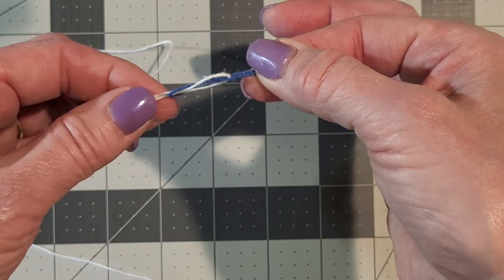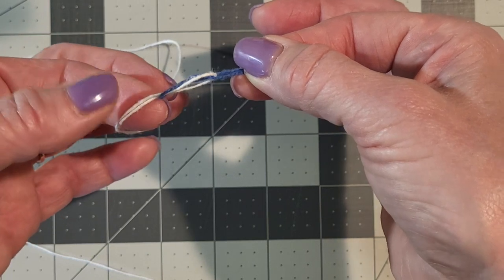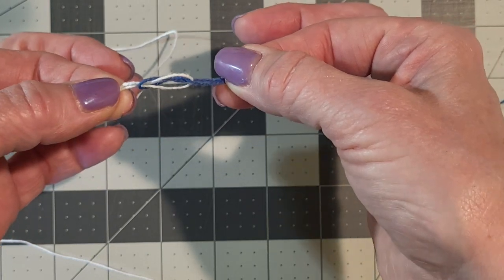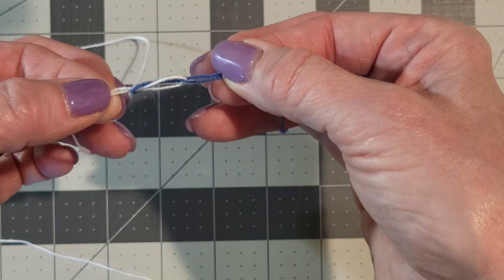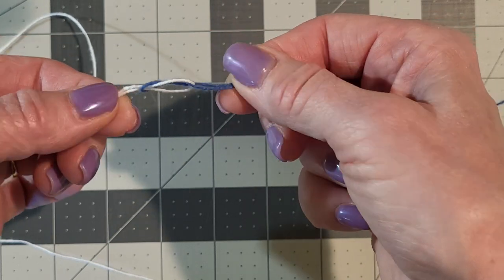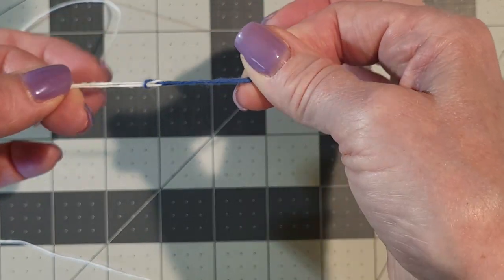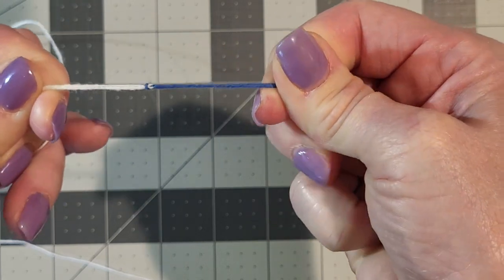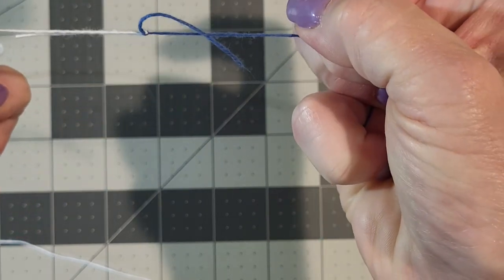Now slip your fingers down so you're pinching just the two tails, the long tail and the short tail of the old warp, and you'll pull in opposite directions and that's all there is to it.